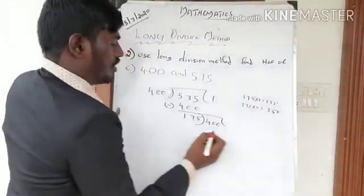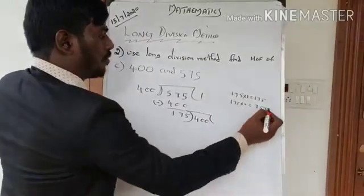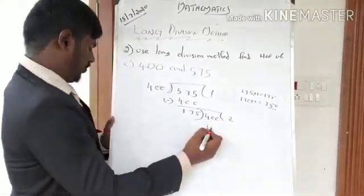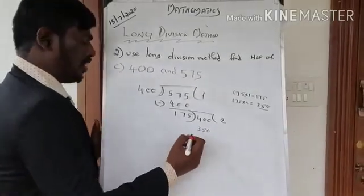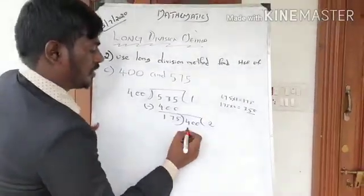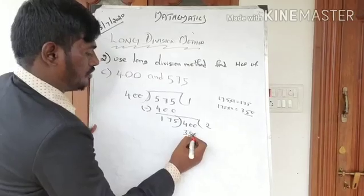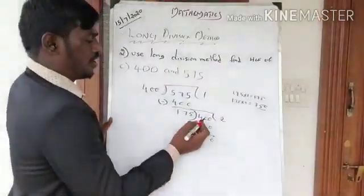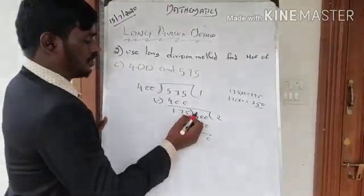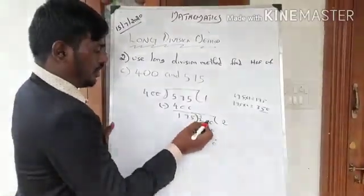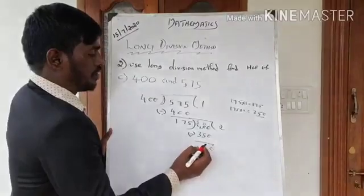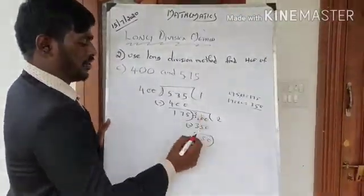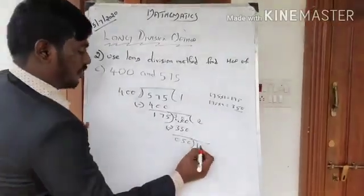Now 175 goes into 400 — 175 twos are 350. So I write 2 as the quotient and 350 below 400. Subtract: 0 minus 0 is 0, 10 minus 5 is 5 with a borrow, then 3 minus 3 is 0. The remainder is 50.